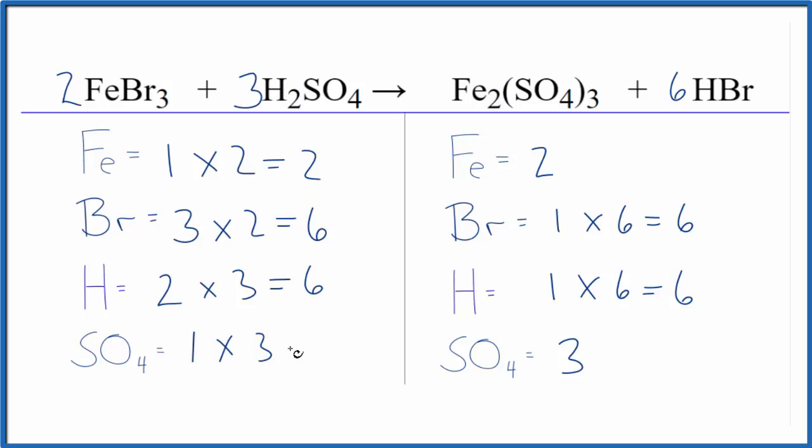So it's a lot quicker when you can count polyatomic ions as just one thing if they're on both sides. You get the same answer, this just saves a lot of time, which can be important on exams.